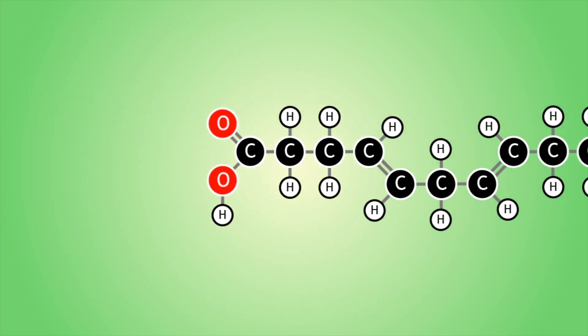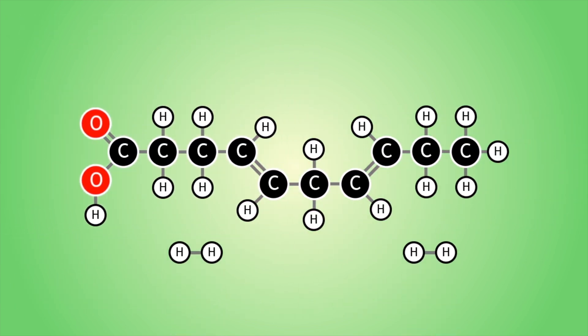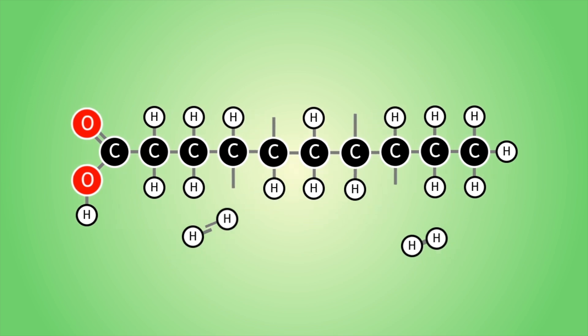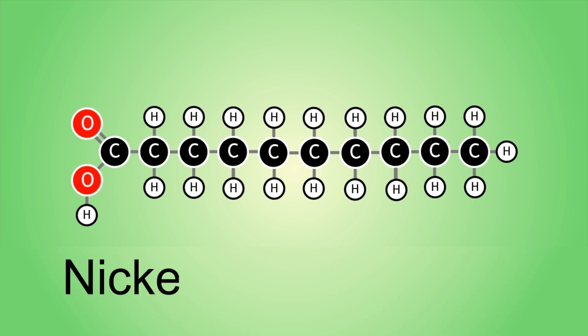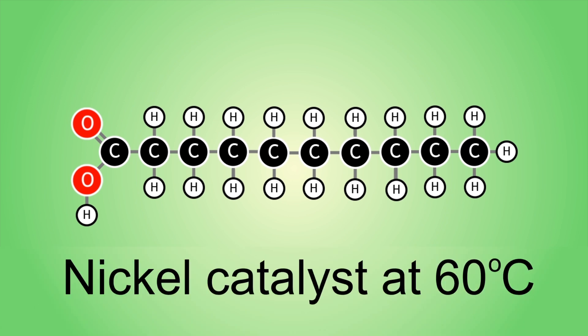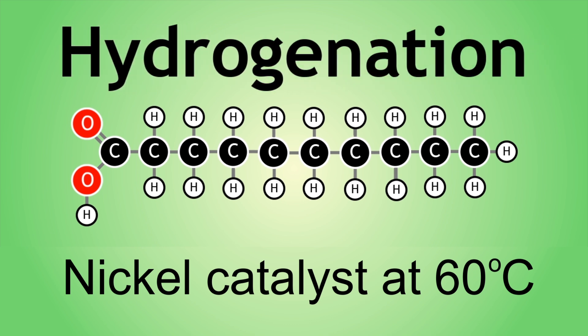We can hydrogenate or add hydrogens to carbon-carbon double bonds by passing hydrogen gas over these molecules in the presence of a catalyst at 60 degrees Celsius. This is a hydrogenation reaction.